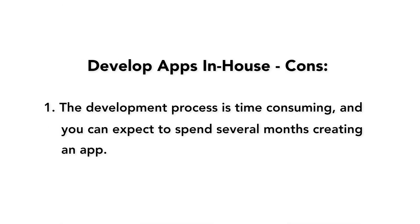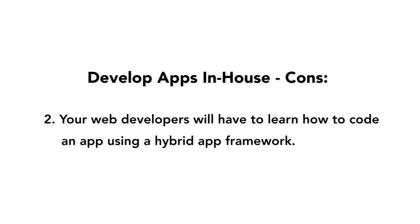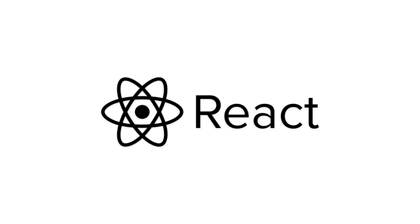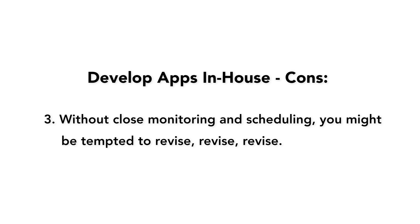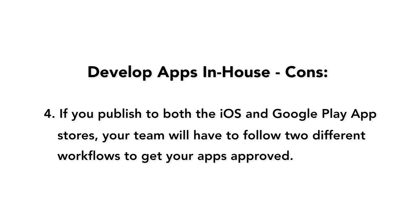There are some cons to this method. The development process is time-consuming, and you can expect to spend several months creating your app, taking you and your team away from other projects. Your web developers will have to learn how to code an app using a hybrid framework like PhoneGap, learn React Native to build a cross-platform native app with JavaScript, or you'll have to hire mobile app developers — at least two, as they tend to specialize in either iOS or Android. Without close monitoring, you might be tempted to revise repeatedly, which can be time-consuming and costly. And if you publish to both the iOS App Store and Google Play Store, your team will have to follow two different workflows to get your apps approved.